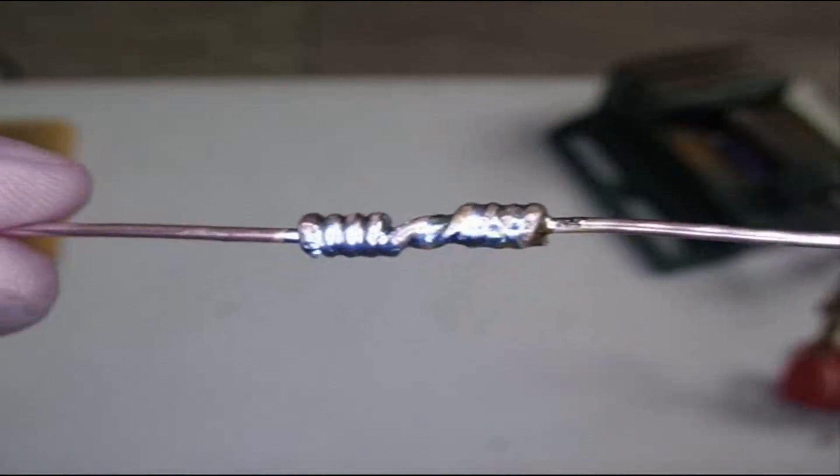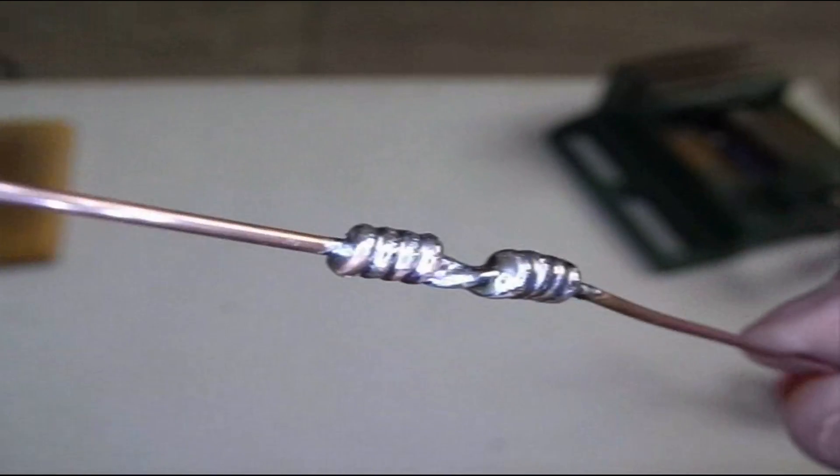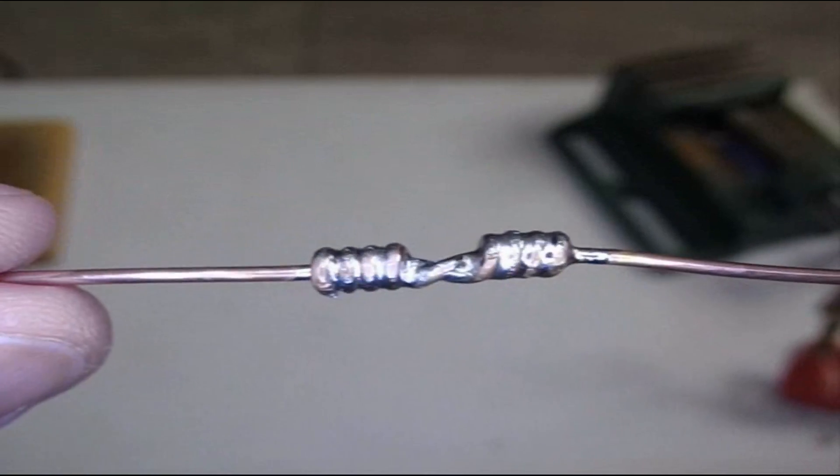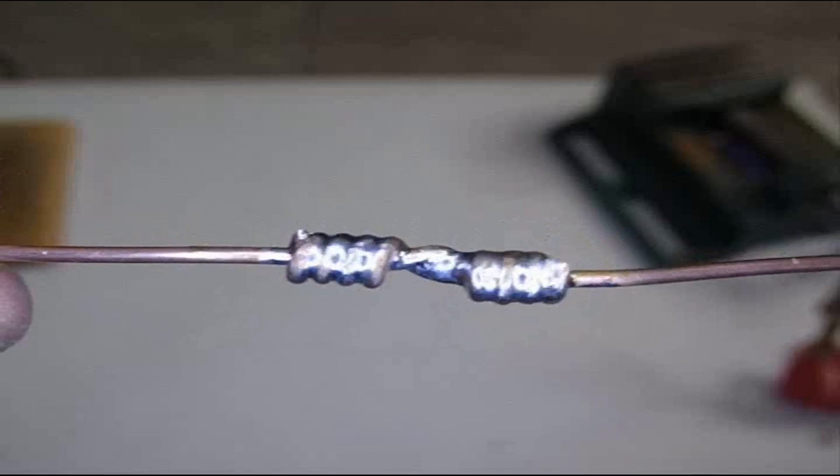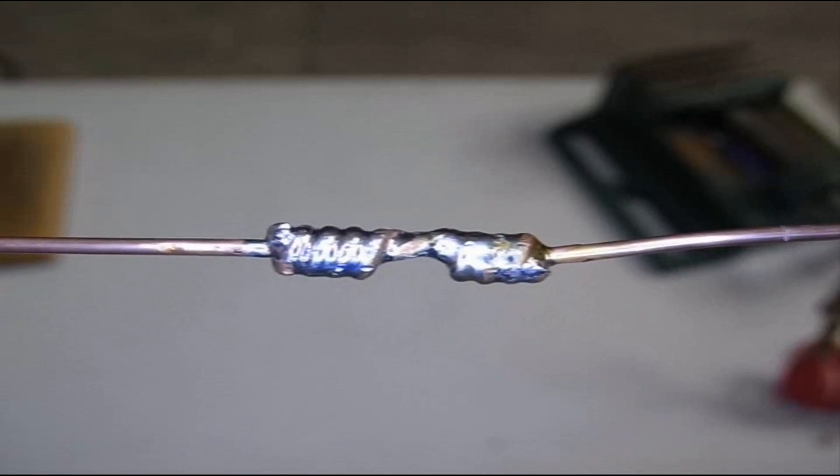So here's our joint. And we're soldered through the ends. Yes we've got good penetration of solder throughout the joint. And that will be tremendously strong. It will easily support the pull of the wire and be about as strong as the wire itself.